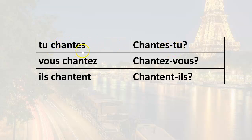So tu chantes means 'you sing.' Chantes-tu? means 'do you sing?' Vous chantez — also 'you sing' — becomes Chantez-vous? meaning 'do you sing?' Ils chantent means 'they sing,' and the question form is Chantent-ils? — 'do they sing?'